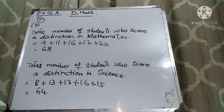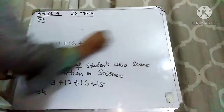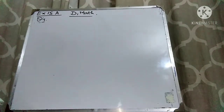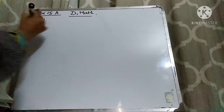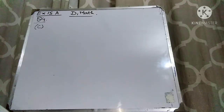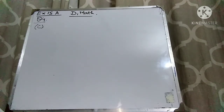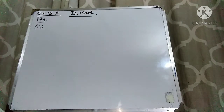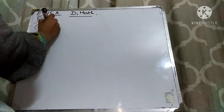Now let's come to part C. Part C says: express the number of students who scored a distinction in mathematics in class 1D as a percentage of the total number of students who scored a distinction in mathematics in the five classes. In class 1D, there were 12 students who scored a distinction in mathematics. The total for all five classes was 68.